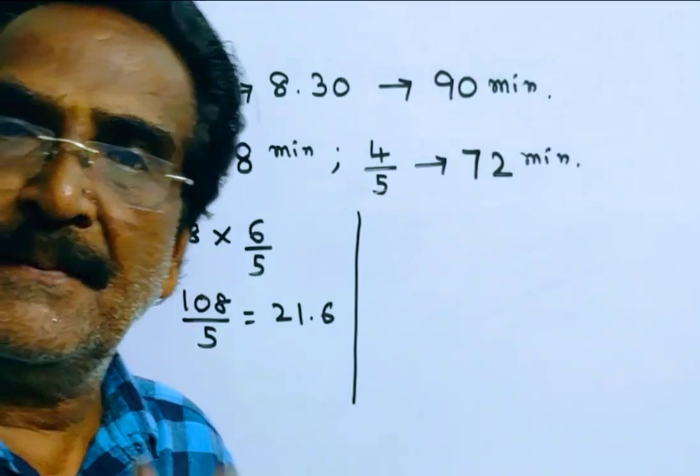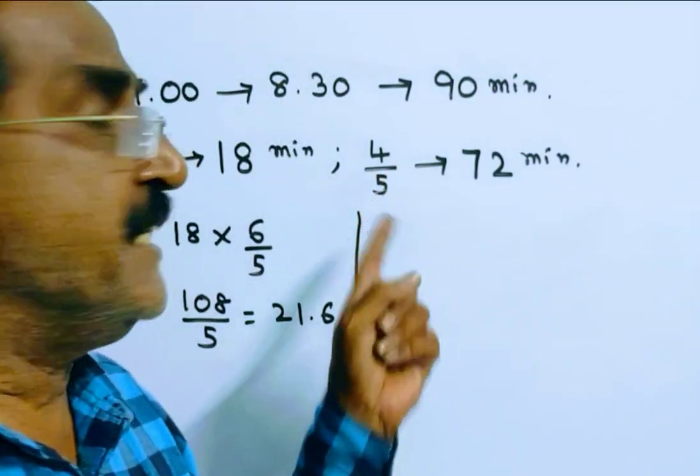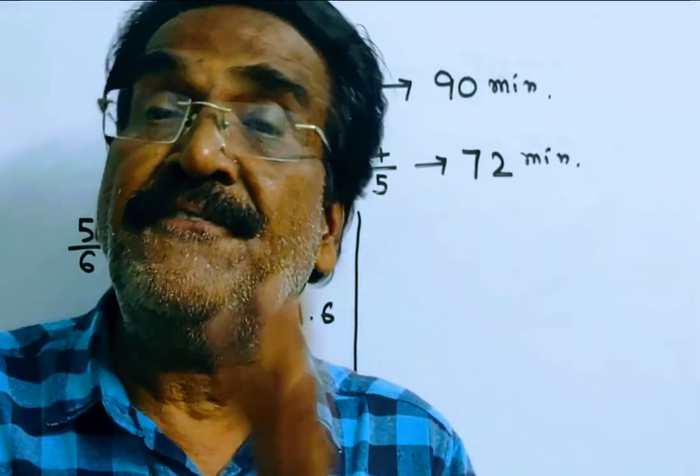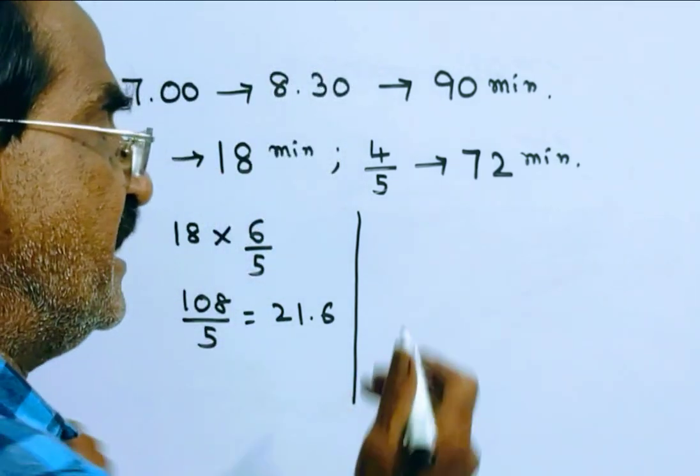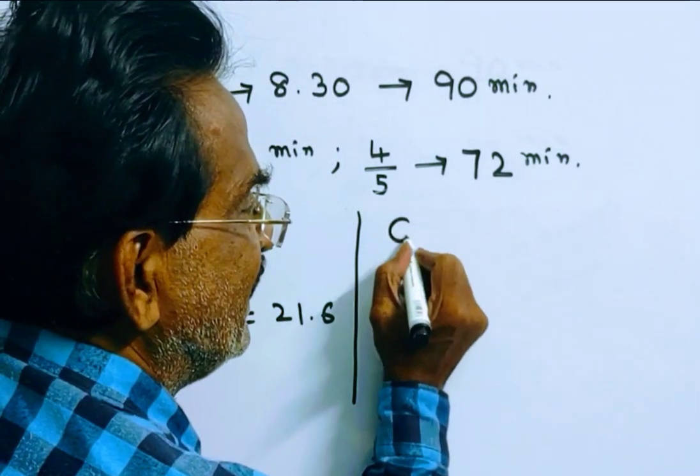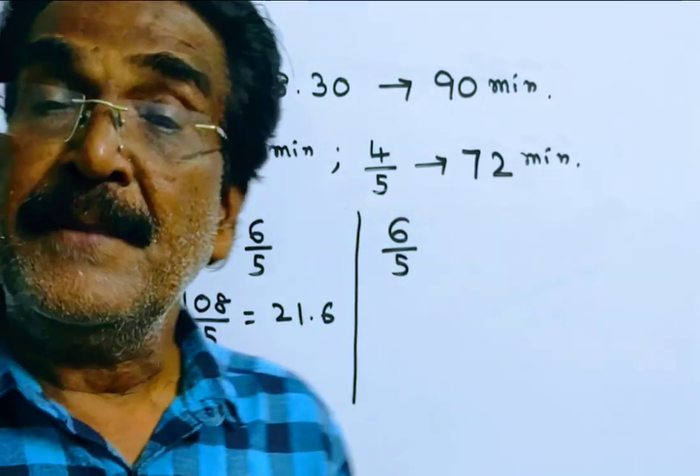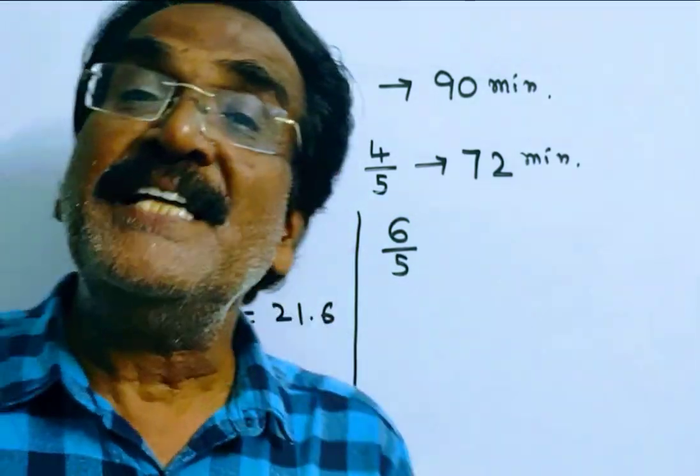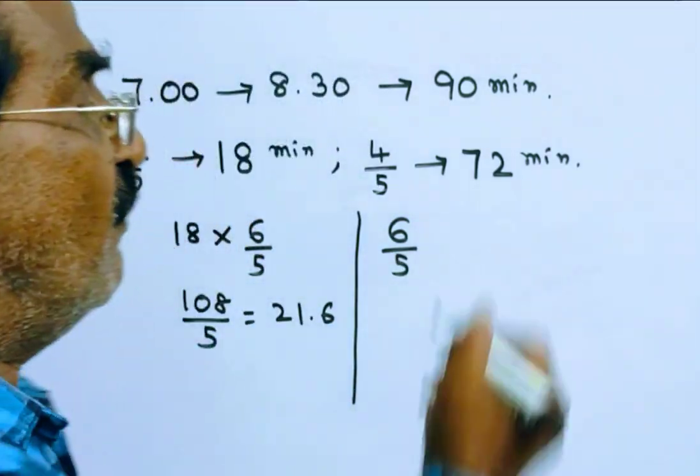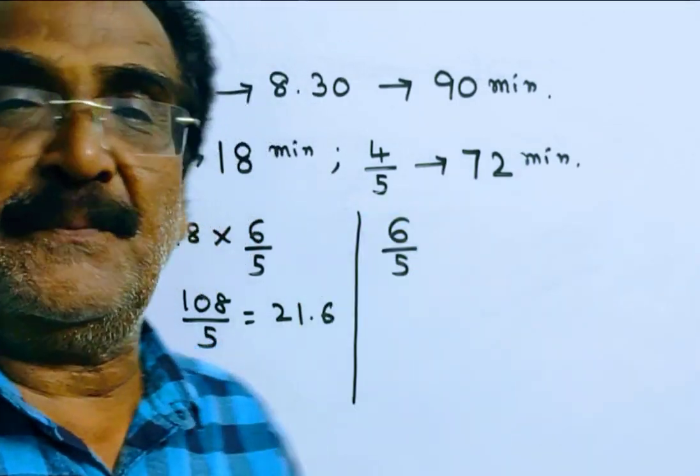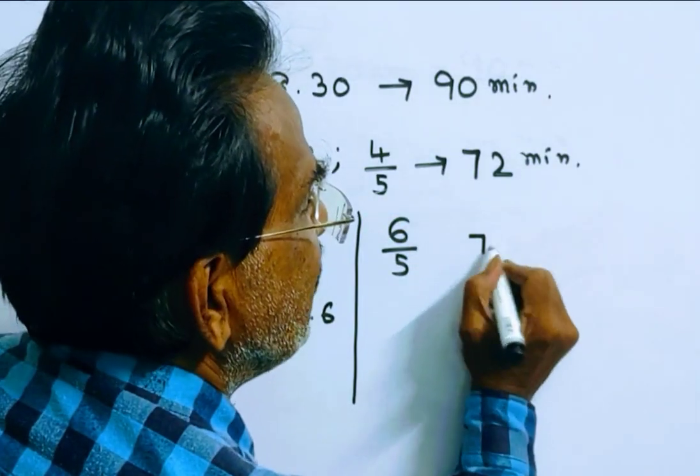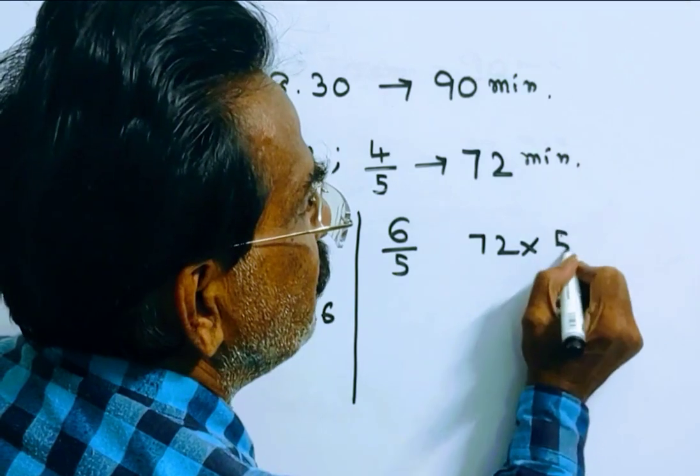Devesh travels the remaining distance at 6 by 5 of his usual speed. If he travels at 6 by 5 of his usual speed, he takes 5 by 6 of his usual time. What is his usual time? 72 minutes. So he takes 5 by 6 of his usual time.